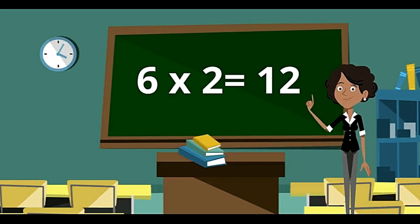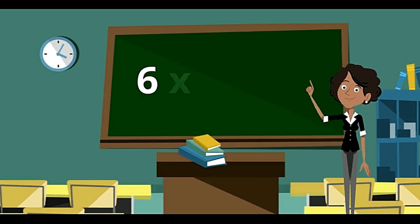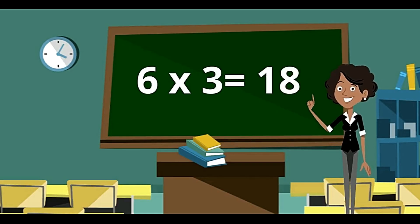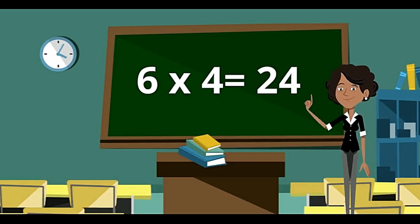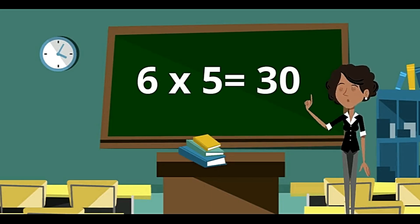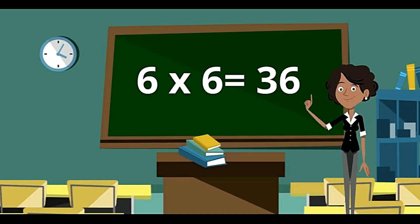6 twos are 12. 6 threes are 18. 6 fours are 24. 6 fives are 30. 6 sixes are 36.